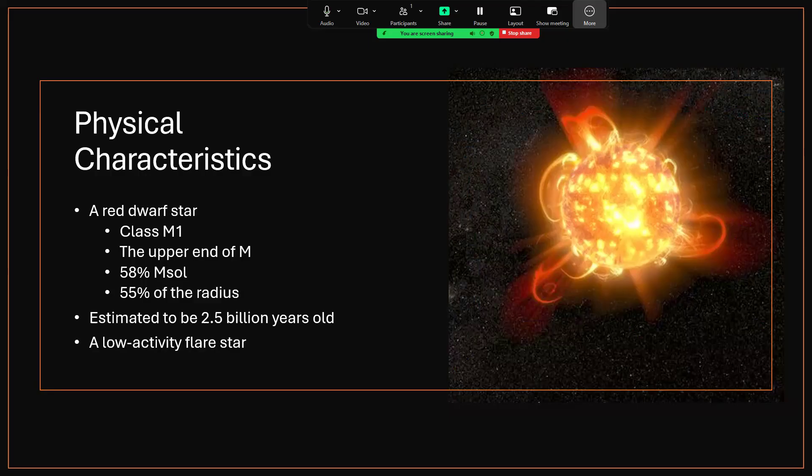It's 58% the mass of our sun, so getting on for two-thirds of the mass, and just 55% of the radius. Quite big for a red dwarf. Some of them are as small as 7.5% the mass of the sun, and maybe 10% of the radius is not uncommon.